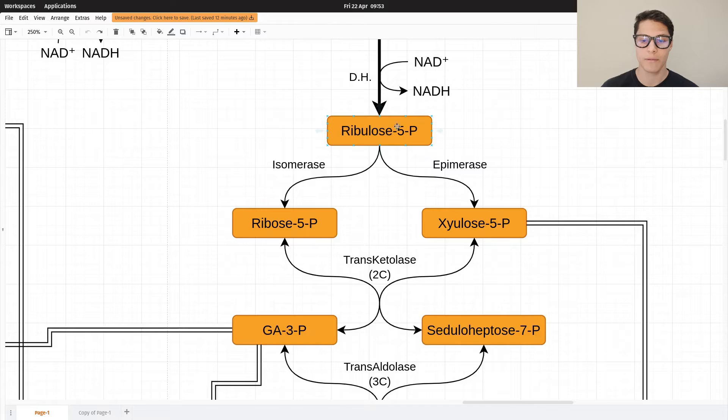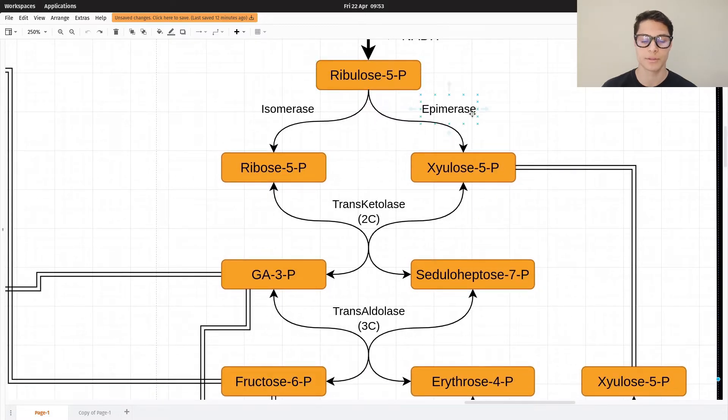Ribulose 5-phosphate is then converted into ribose 5-phosphate via an isomerase since these are very similar molecules, or it can be converted into xylulose 5-phosphate via an epimerase. These are diastereoisomers.